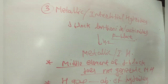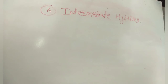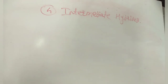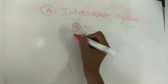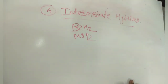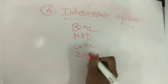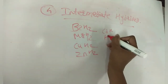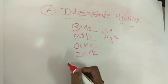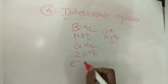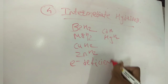The fourth category is intermediate hydrides. Elements that do not fit into the covalent, ionic, or metallic hydride categories belong to this special class. Examples include barium hydride (BaH₂), magnesium hydride, copper hydride, zinc hydride, cadmium hydride, and mercury hydride. These have properties intermediate between metallic and covalent hydrides, and they are electron-deficient hydrides.